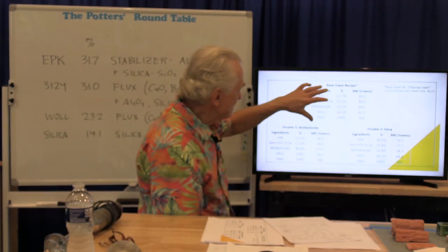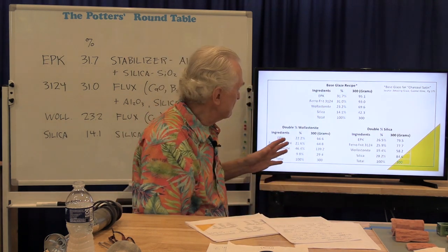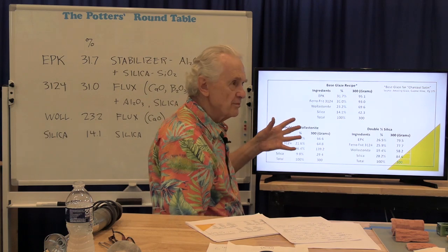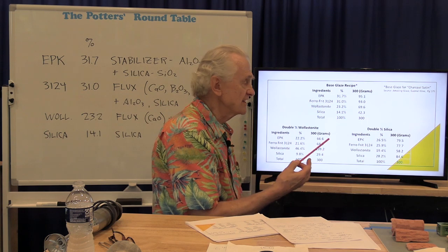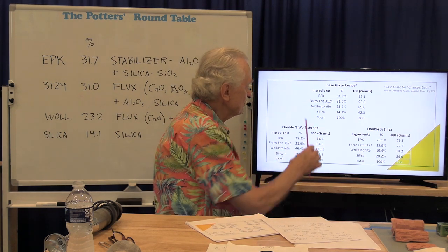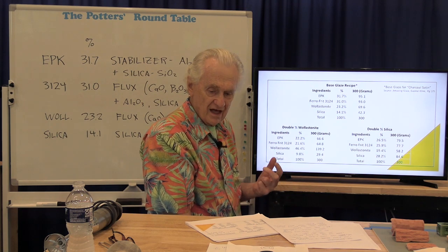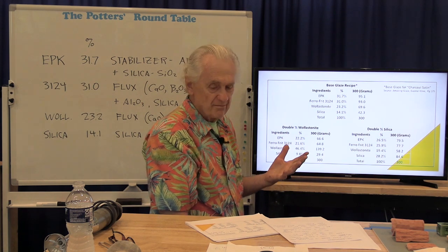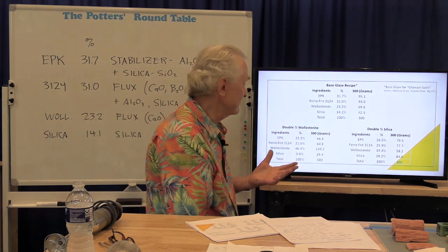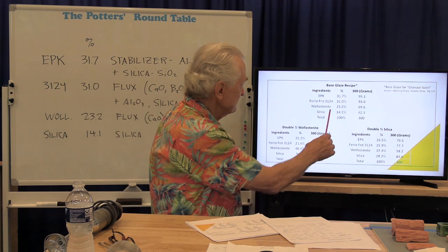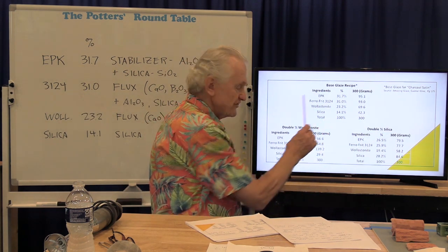You may or may not be familiar with these ingredients. EPK is Edgar Plastic Kaolin — a type of kaolin clay. Ferro Frit 3124 is a frit: a calcium-boron-sodium-aluminum silicate that melts at around 1600°F, making it a relatively low-melting frit used as a flux. Wollastonite is a naturally occurring calcium silicate mineral. And of course, silica.